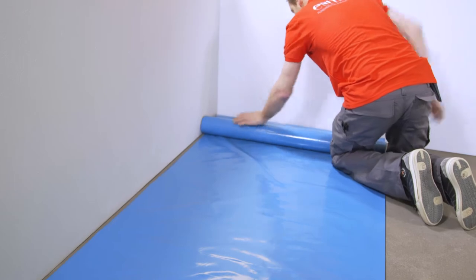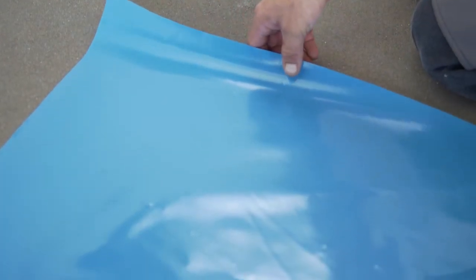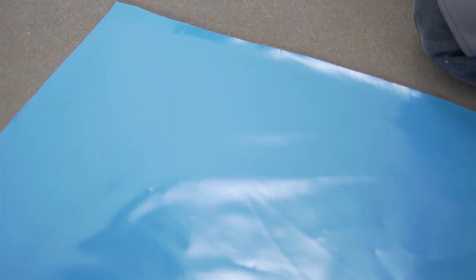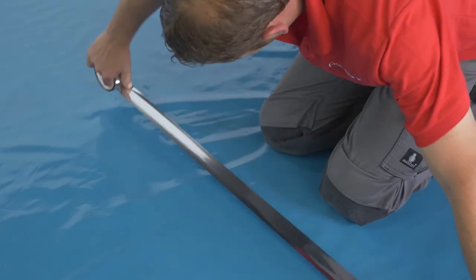FloorFixSmart levels out an unevenness of up to 2 millimeters. Leave a 5 centimeter film access against the skirting or wall. The moisture barrier joints have to overlap by 20 centimeters or be taped with vapor proof tape.